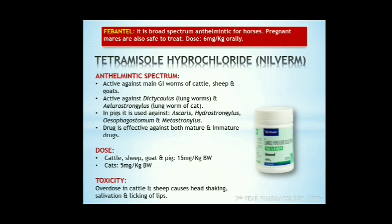Levamisole is a broad-spectrum anthelmintic and immunomodulator also used in animals where the immune system is depressed. It is rapidly absorbed and distributed to all parts of the body. Peak blood concentration is obtained within 1 hour of injection. Tissue concentrations persist for 5 days. It is mainly excreted through feces and urine. Low concentrations stimulate the ganglion of worms and produce muscle paralysis; higher concentrations interfere with carbohydrate metabolism. The anthelmintic spectrum includes Haemonchus, Ostertagia, Trichostrongylus, Cooperia, Metastrongylus, Ascaris, Hyostrongylus, Trichuris, and Dictyocaulus. Dose: sheep, cattle, and pig at 7.5 mg/kg orally; poultry at 18-36 mg/kg as subcutaneous injection (18.2% solution, 2 ml/kg). Cattle should not be slaughtered within 48 hours of oral treatment and 7 days of parenteral treatment due to residual problems. Overdose in cattle and sheep may cause head shaking, salivation, and licking of lips.